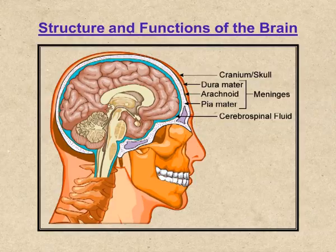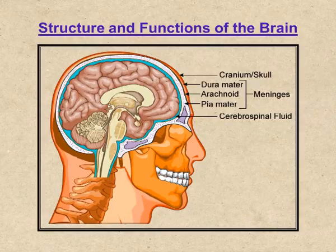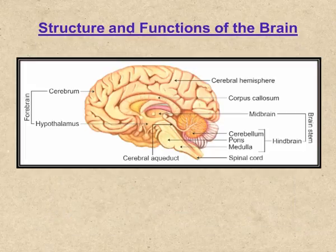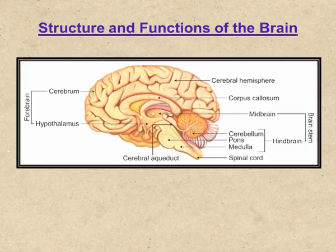The innermost membrane is a highly vascular membrane richly supplied with blood. The space between the covering membranes, central spaces of the brain, and the central canal of the spinal cord consists of a fluid called cerebrospinal fluid, which protects these regions from shocks. The brain consists of three primary regions: the forebrain, the midbrain, and the hindbrain.